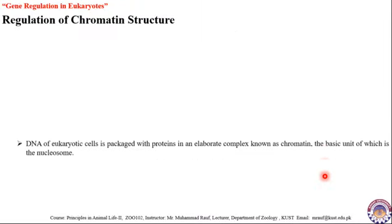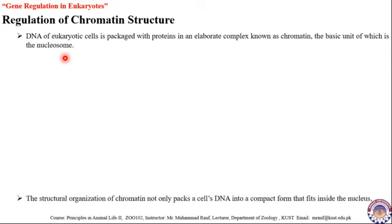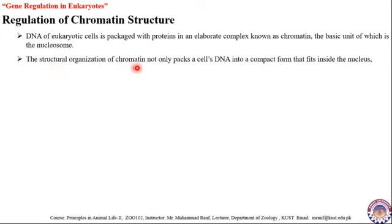The first major level is regulation of chromatin structure. DNA of eukaryotic cells is packed with proteins in an elaborate complex called chromatin, which is a combination of DNA and associated proteins. The associated proteins are of two types: histones and non-histones. DNA is directly associated with the histone octamer, coiling around it to form a structure called the nucleosome.